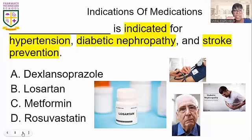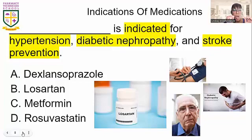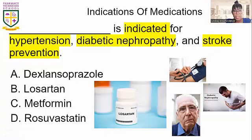This one says the indication of medications. It's indicated for hypertension, diabetic neuropathy, and stroke prevention. They want to know which medication is indicated for all three, and the medication that can be used for all three is Losartan. I put pictures here of what high blood pressure, somebody with diabetic neuropathy, and a stroke patient looks like.